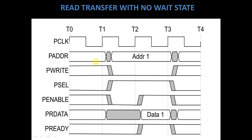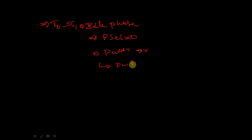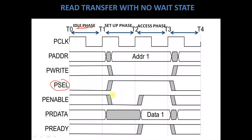Read transfer with no wait state. During clock cycle T0 to T1, which is an idle phase, Pselect is equal to 0. When Pselect is equal to 0, Paddress is unknown. Since it is a read transfer, PRdata is also unknown, and PEnable is also unknown. Pready is low.